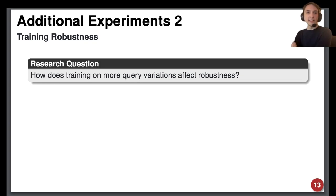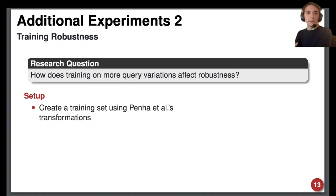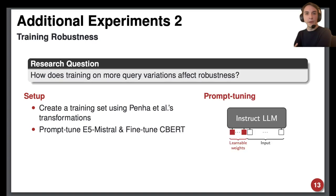The problem with prompting is its inherently discrete nature, so we alternatively tested how training on a training set from Peña et al.'s transformations affects robustness. To test this, we fine-tuned CharacterBERT and prompt-tuned E5-Mistral. Prompt tuning refers to learning weights, prepended to the input's embeddings, instead of manually typing a prompt. The LLM is frozen during training, such that only the fixed prefix is learned.